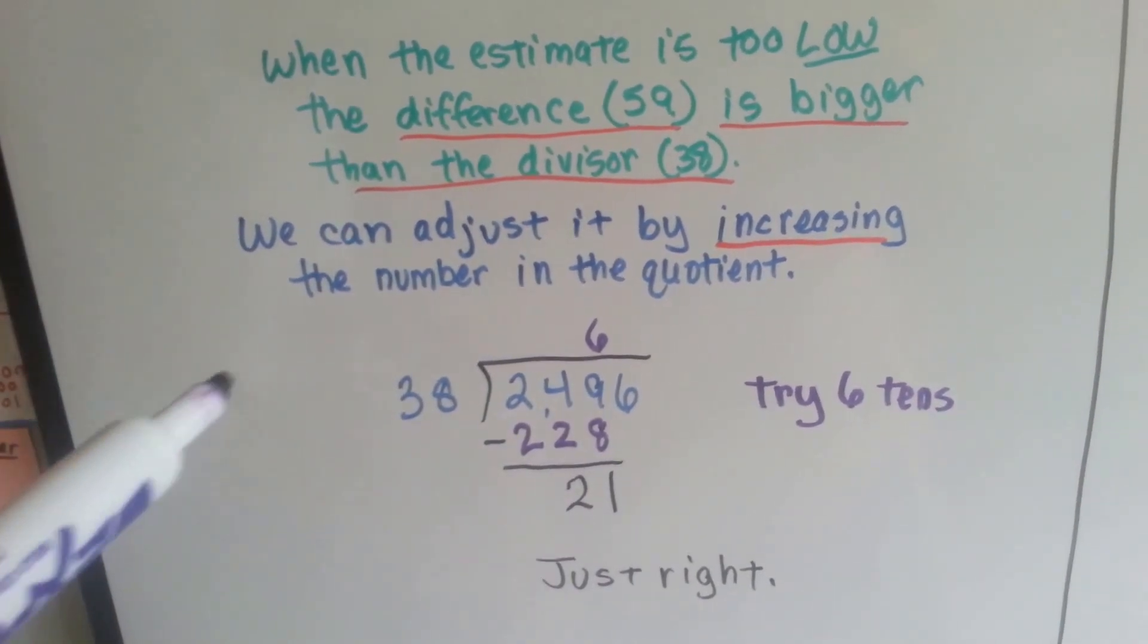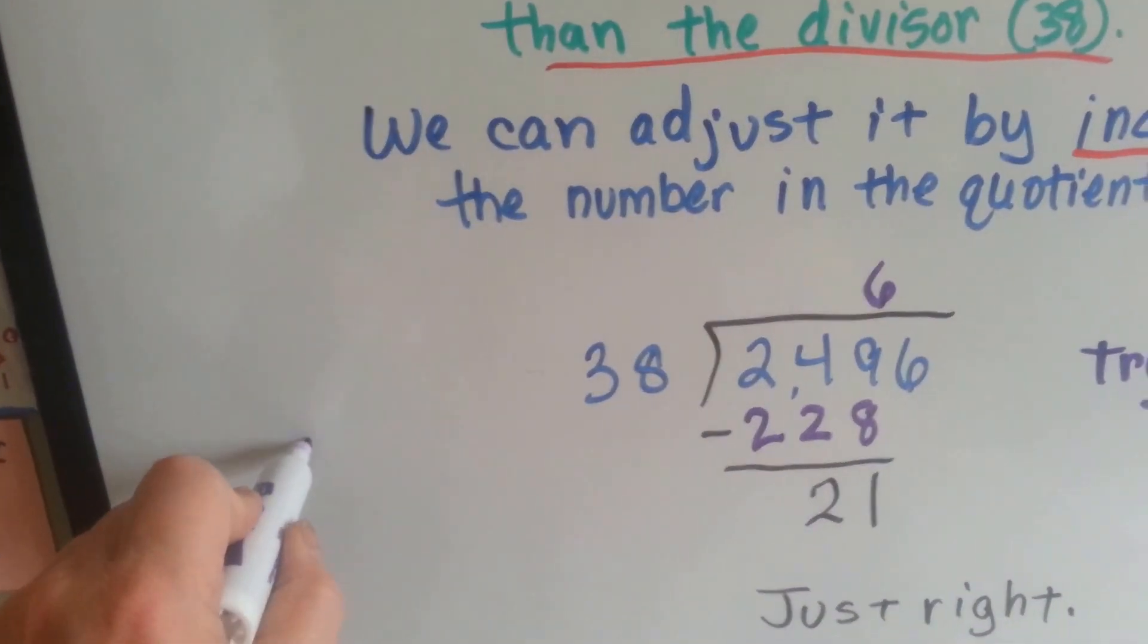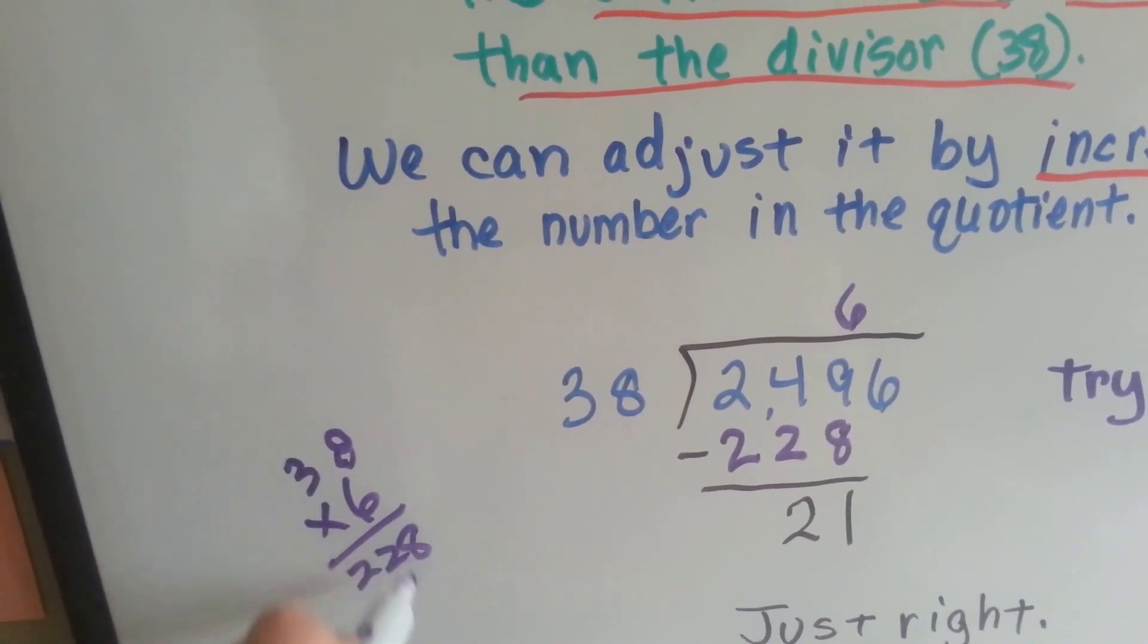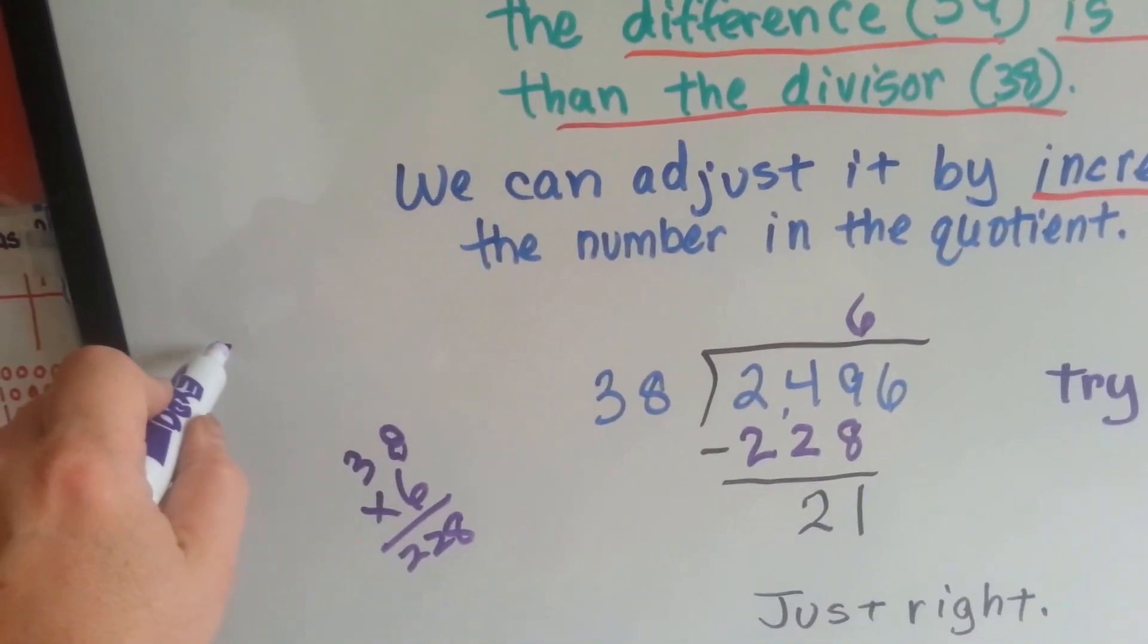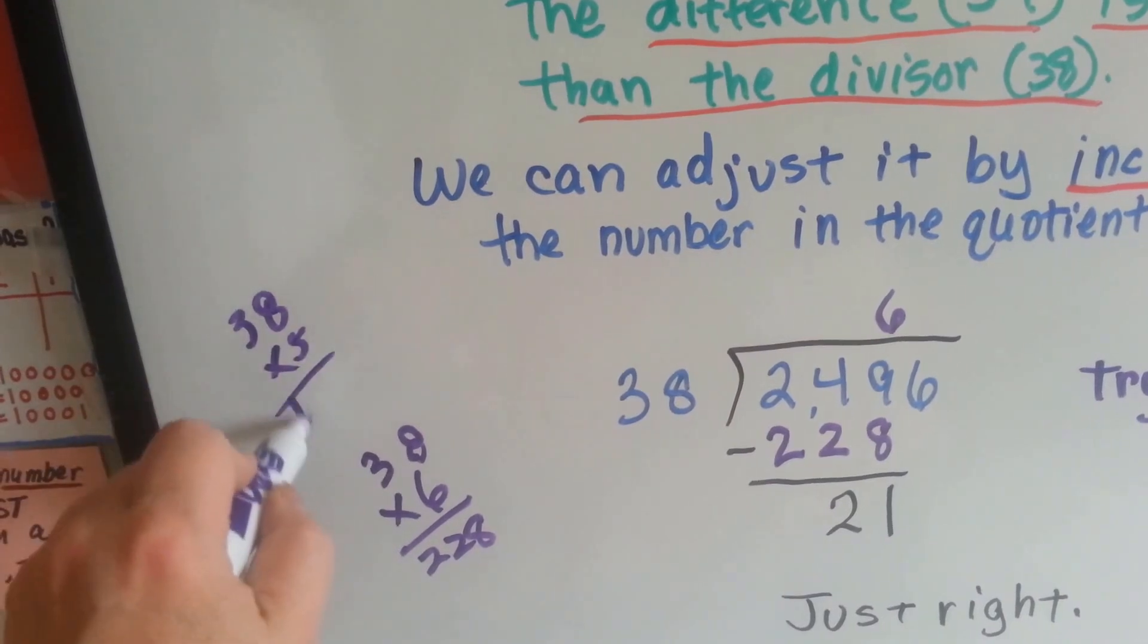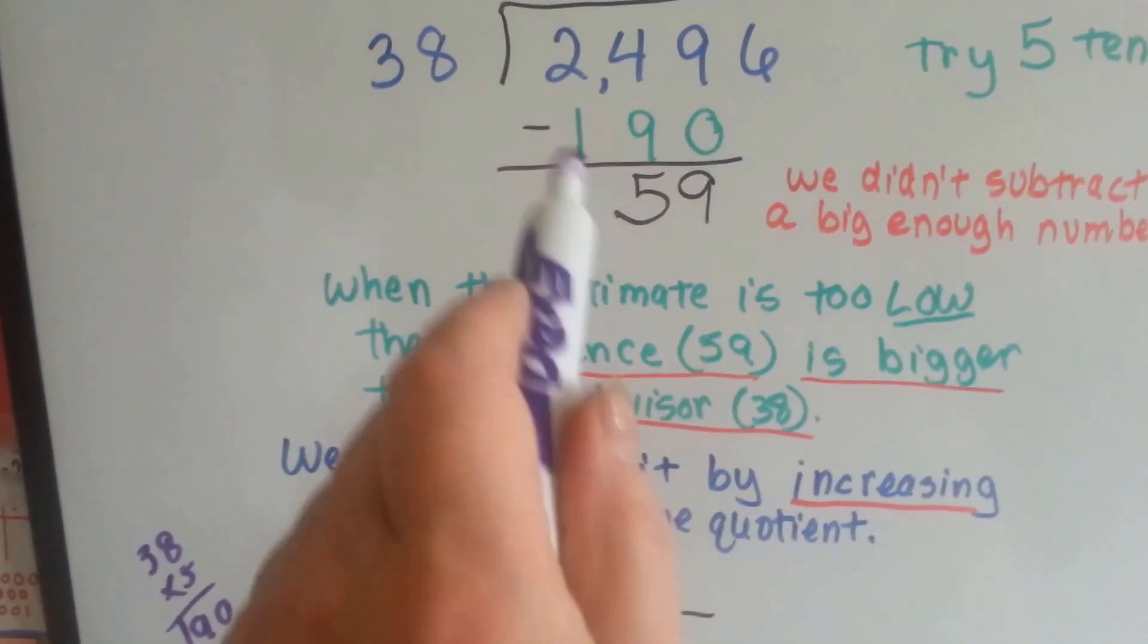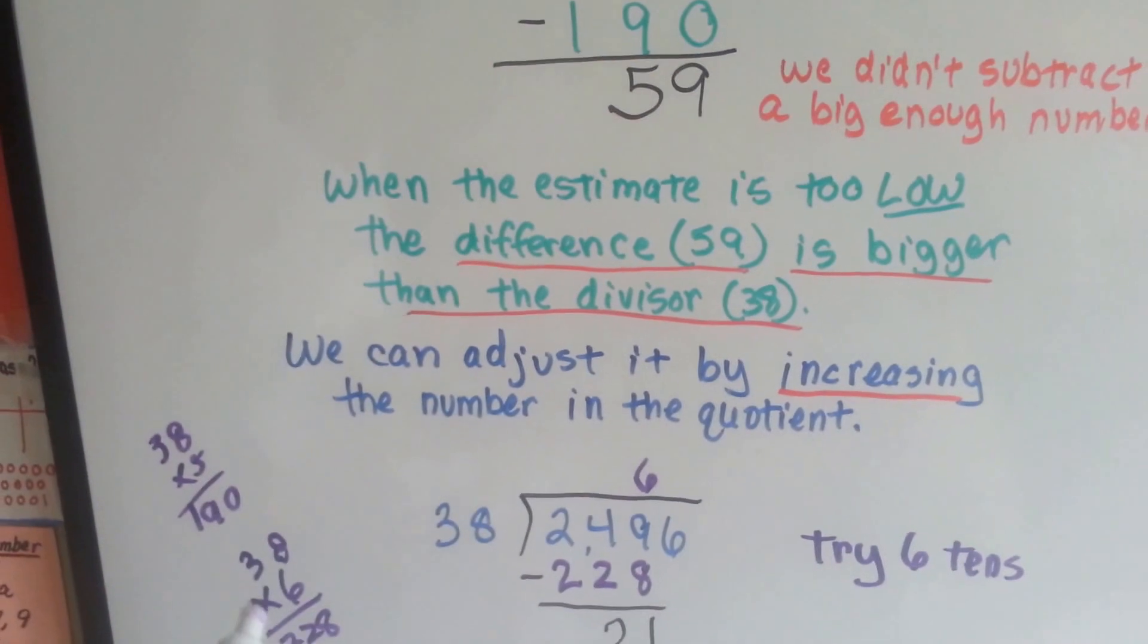What I do is, I don't do it up here, I do it off on the side. I would go off on the side on scratch paper, and if I guessed low, it would be off on the side on scratch paper. And if I got a 190, and I saw that I could fit another divisor in there, I would just go to the next multiplication.